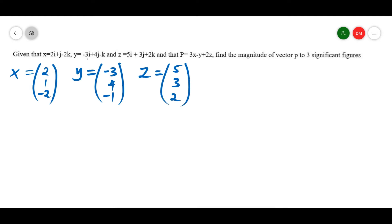After writing them in terms of their column vectors, we come and substitute. Look at our equation here, that is p is equals to 3x minus y plus 2z. So let us do substitution. Therefore, p is given by 3 times the brackets, x is 2, 1, negative 2.